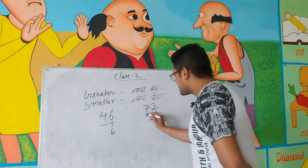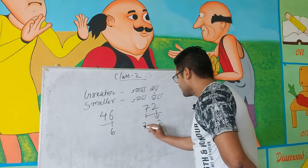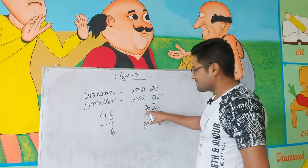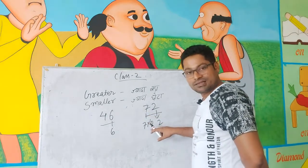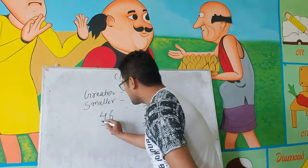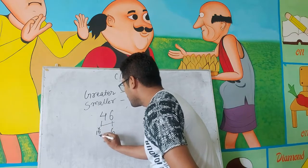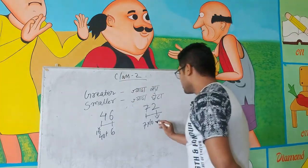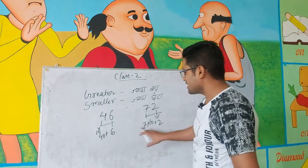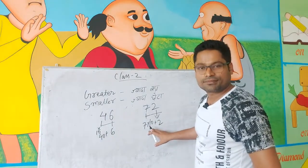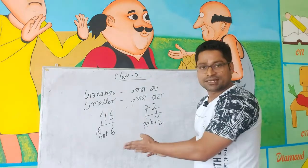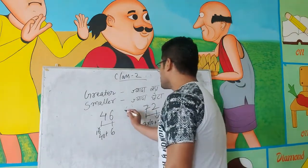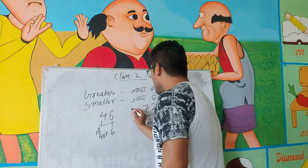लेकिन इसके 10 के place पर 7 है, यानी 70. और 46 के 10 के place पर 4 है, यानी 40. तो अब बताओ, 40 बड़ा है या 70 बड़ा है? Of course, 70 बड़ा है. 7 की value 4 से ज्यादा है. इसलिए 72 जो है वो 46 से बड़ा है.